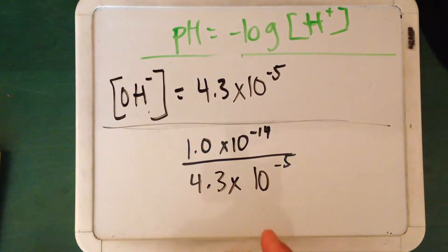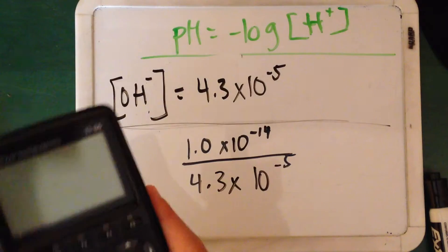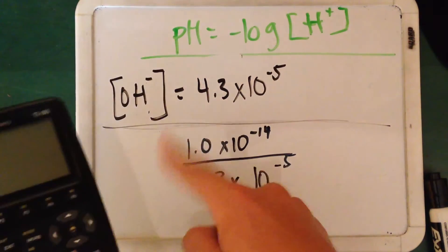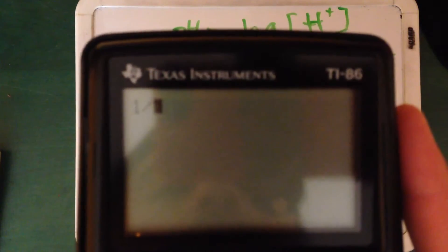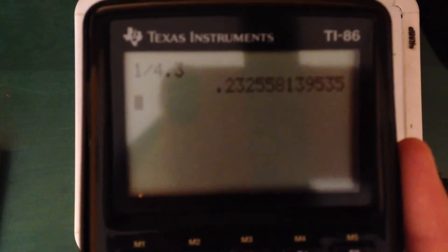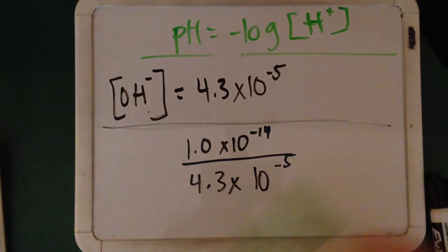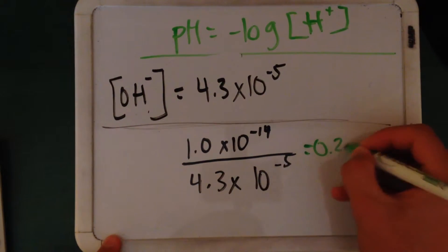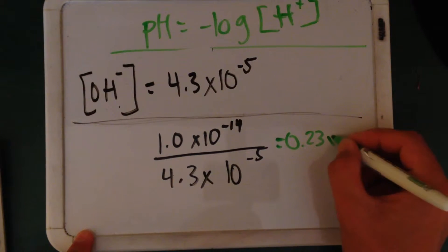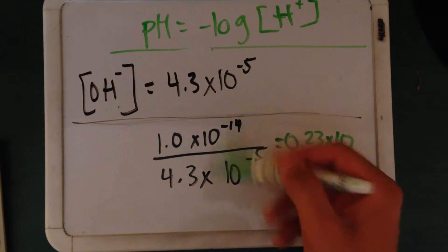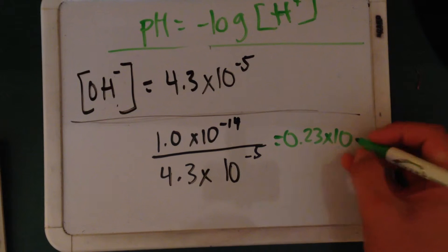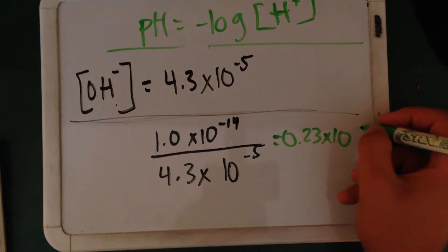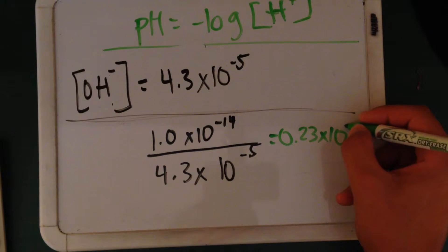So let's say we divide 1 divided by 4.3, then we divide these two. So 1 divided by 4.3 is 0.23, let's just go with 0.23. So it's equal to 0.23 times 10 to the, so when we're dividing, we subtract. That means negative 14 minus negative 5, so that's negative 14 plus 5. That means it's negative 9, so it's 0.23 times 10 to the negative 9.